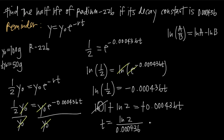Plugging this into a calculator, we get a value of about 1,590. So we can say that 1,590 years is the half-life of radium-226. No matter what amount of radium-226 you start with — 1 gram, 100 grams, or 100 trillion grams — it's going to take approximately 1,590 years for that amount to decay to half of the original amount.